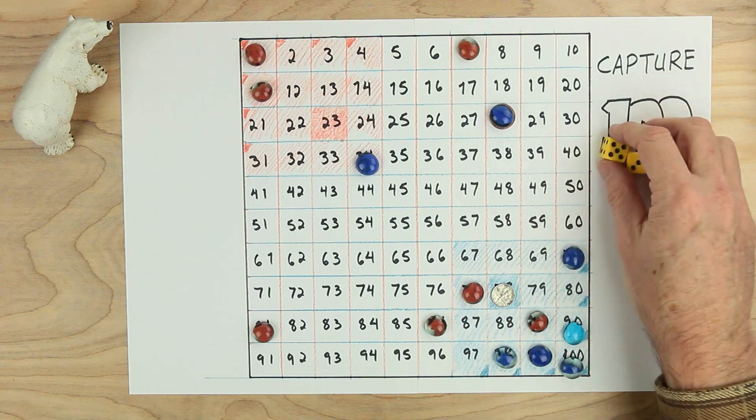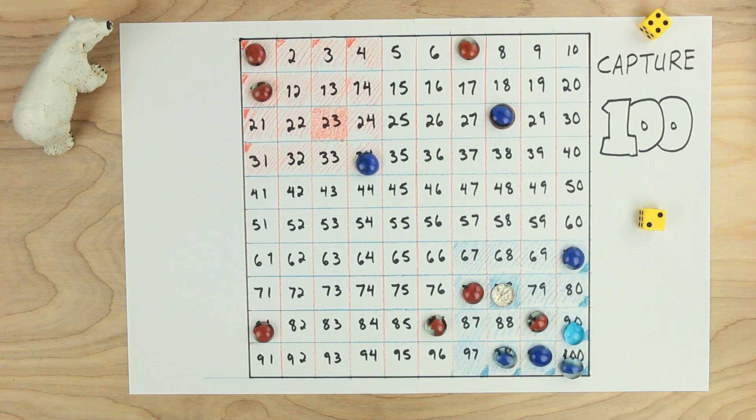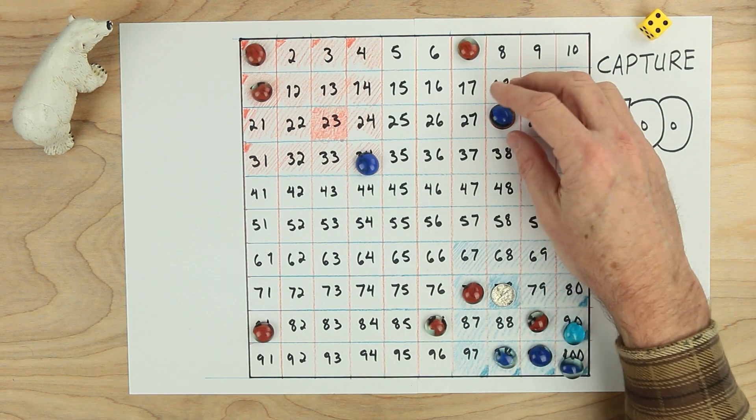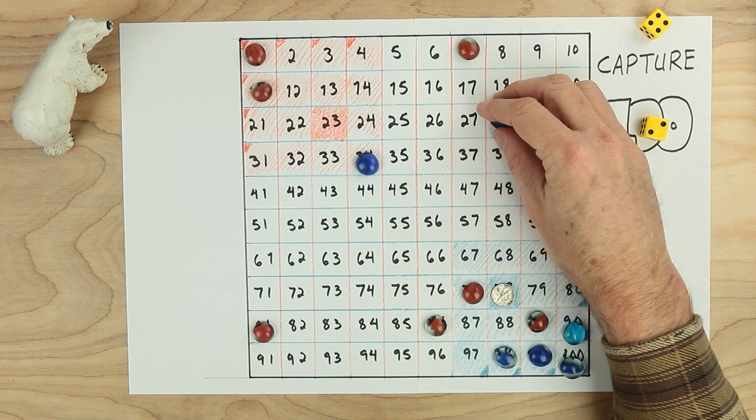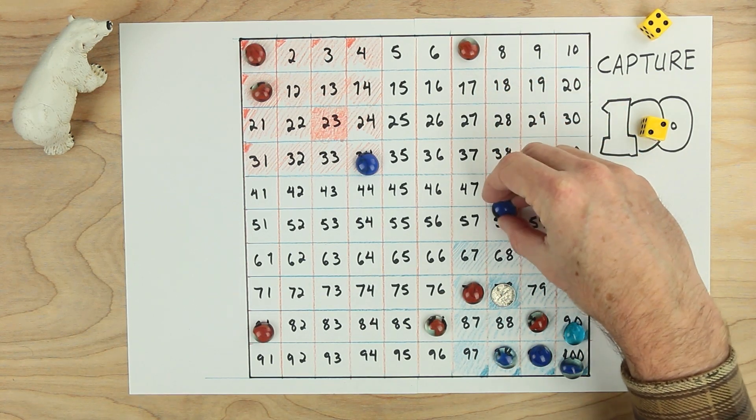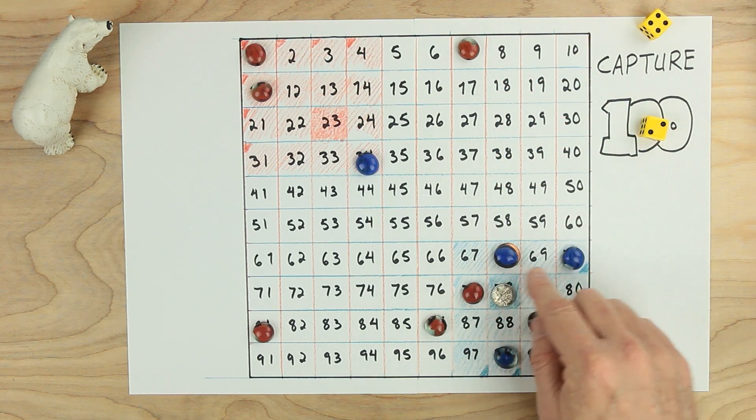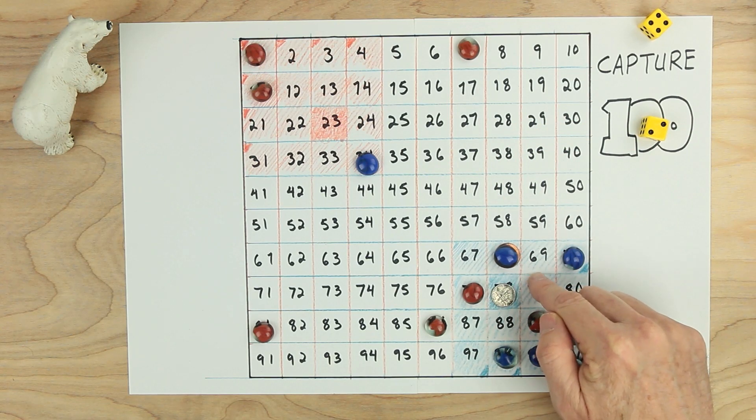Let's see what happens for blue. A four and a two. So blue's going to move four tens, adding four tens, ten, twenty, thirty, forty. And crosses into blue territory. And blue has won the game.